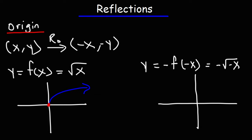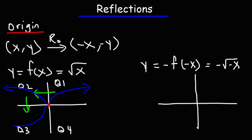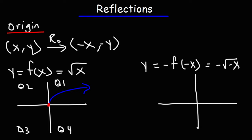When we reflect over the origin, the graph is going to go to quadrant 3. You can think of reflecting over the origin as a two-step process — the order doesn't matter. First, you could reflect over the y-axis, where the graph moves towards quadrant 2, and then reflect over the x-axis, where it moves to quadrant 3. Or if you do it the other way — reflect over the x-axis first, it moves to quadrant 4, then reflect over the y-axis and it moves to quadrant 3. So a reflection over the origin is like a double reflection — you're reflecting both over the x and the y-axis.